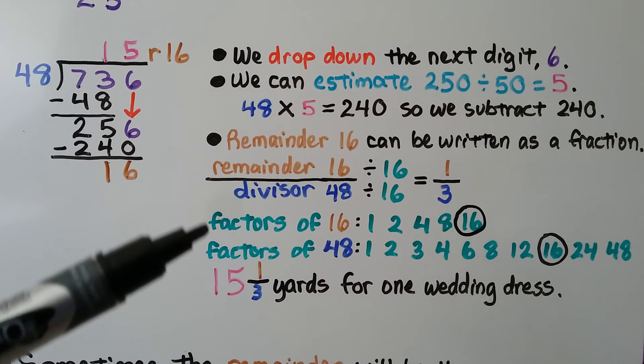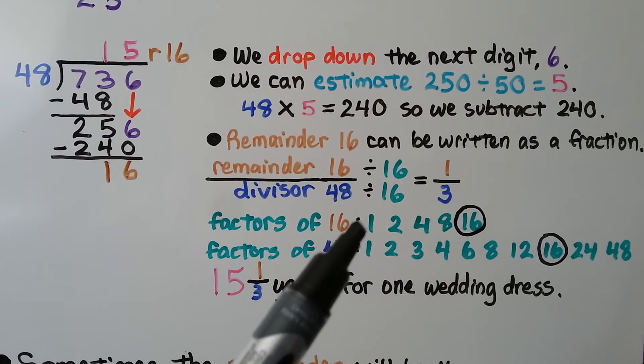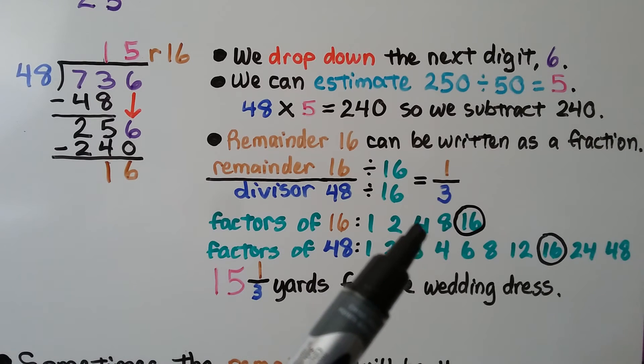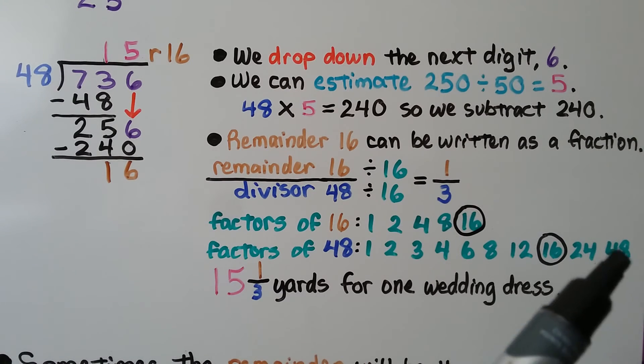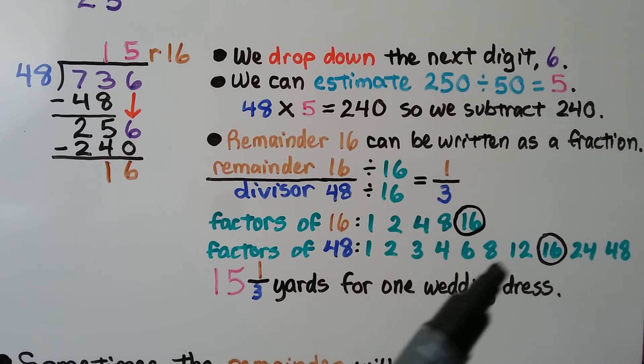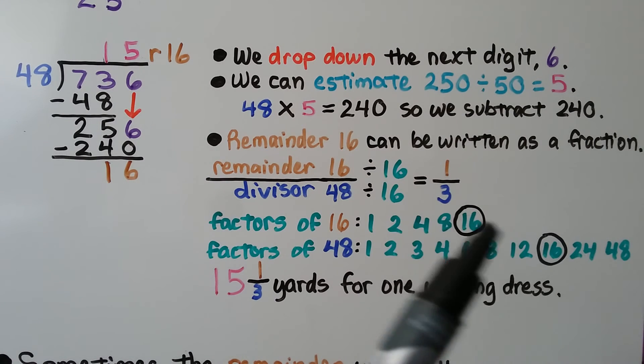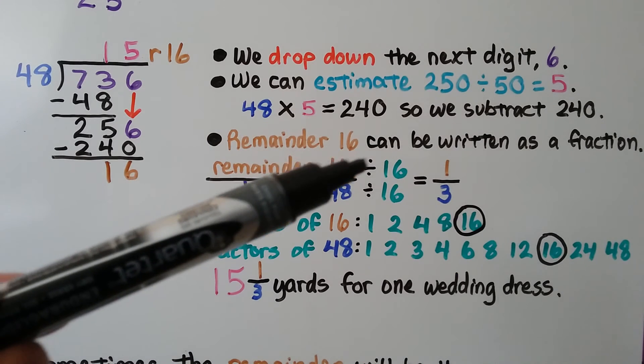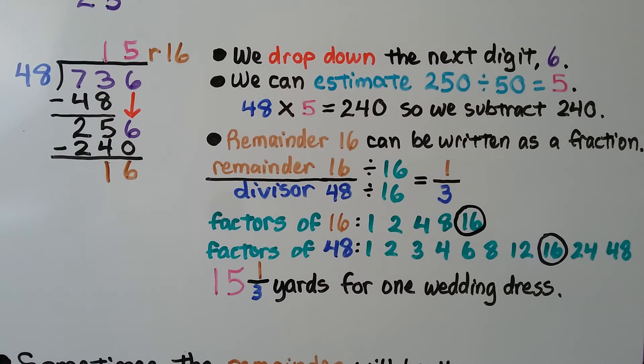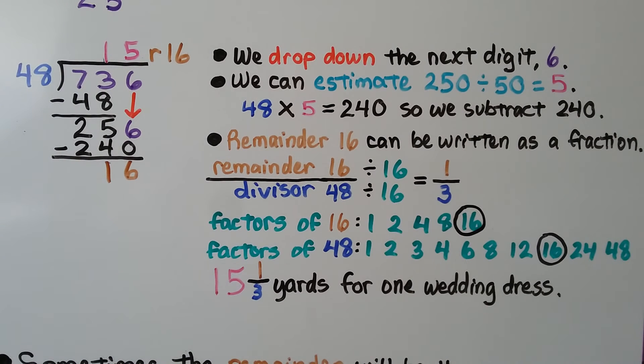We can write out the factors of 16 and 48. The factors of 16 are 1 times 16, 2 times 8, and 4 times 4. And the factors of 48 are 1 times 48, 2 times 24, 3 times 16, 4 times 12, and 6 times 8. And the greatest common factor they have is 16. So we divide 16 by 16 and get a 1. And 48 by 16 and we get a 3. So in simplest form, it's 1 3rd. That means 15 and 1 3rd yards are needed for one wedding dress.